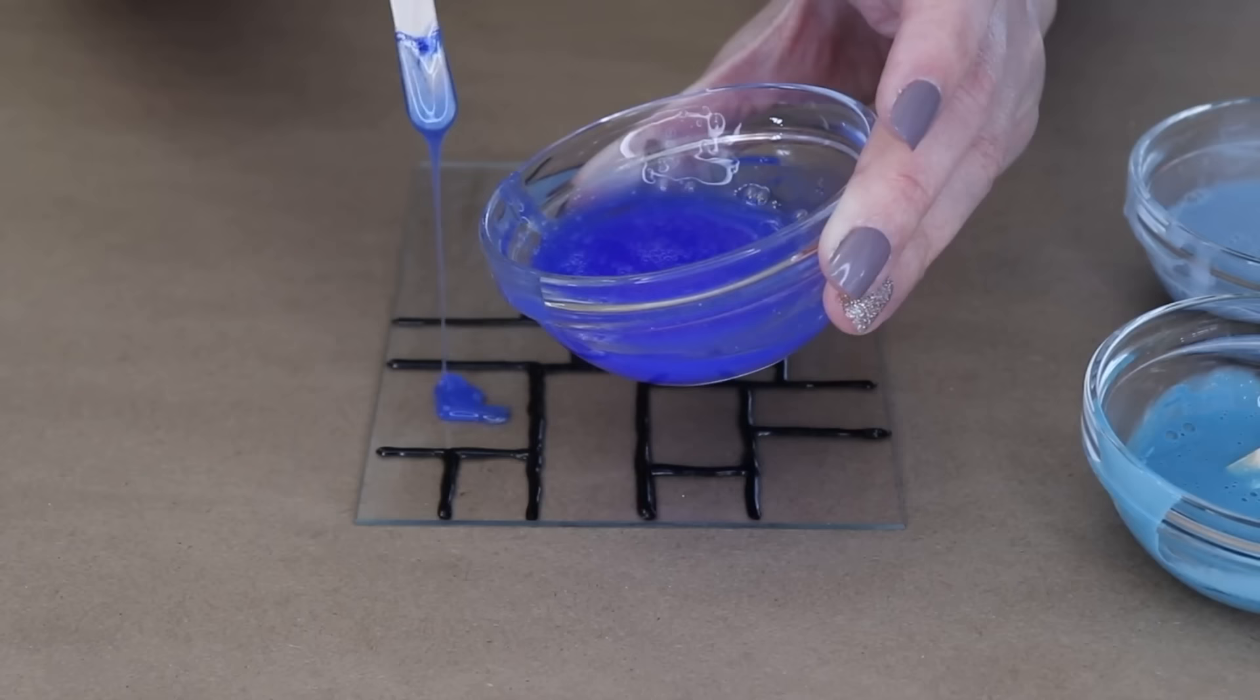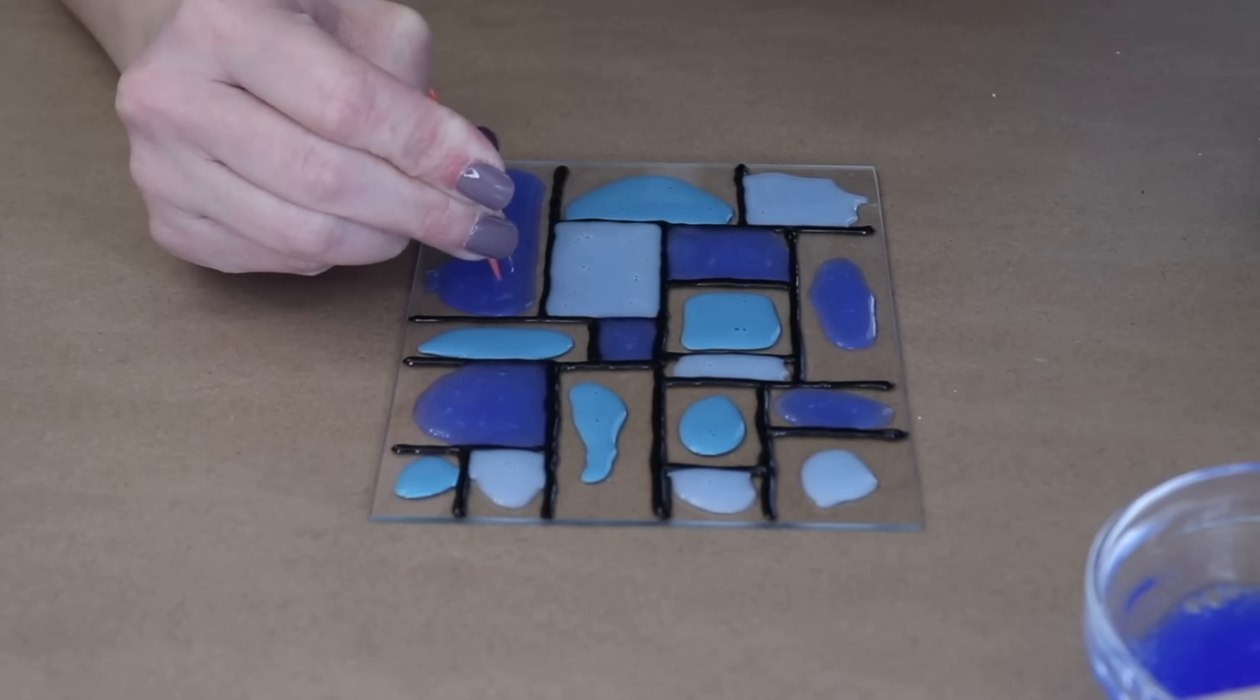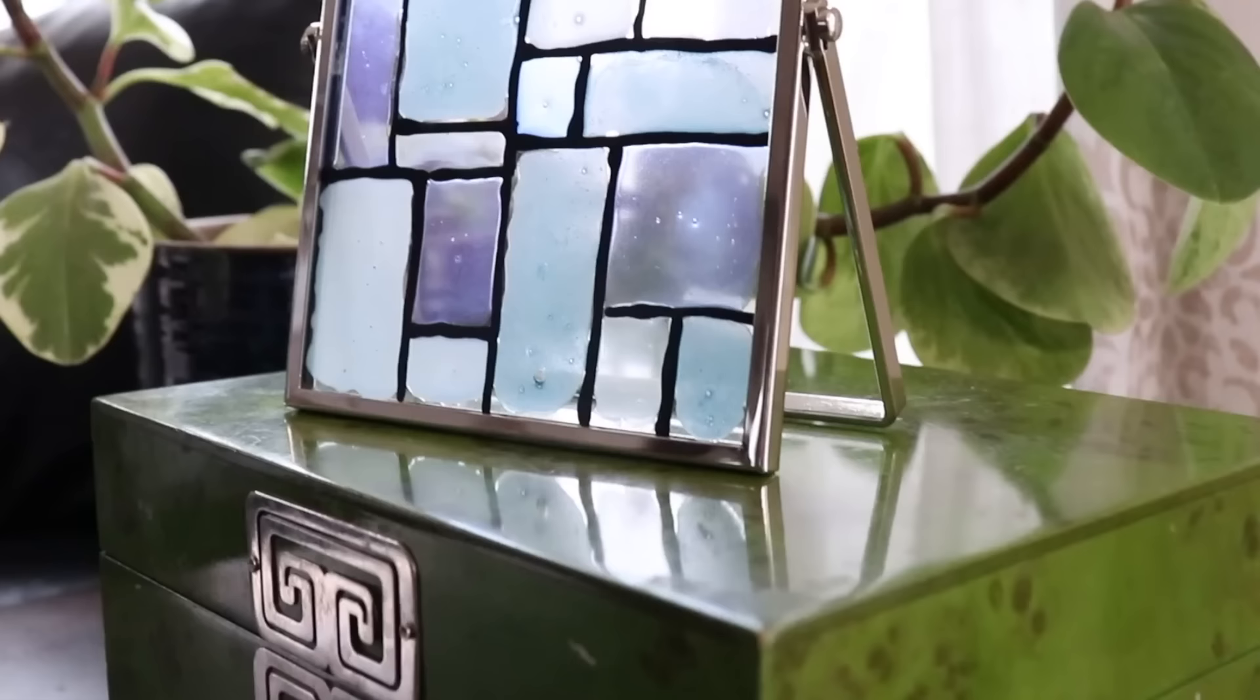Once everything is done, you can grab a toothpick and go back and just pop any of those bubbles that are in there. Then set this aside and just let it be. Once it's dry, pop that glass back in the frame, set up by a window, and you have a beautiful piece of faux stained glass for your home.